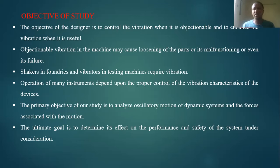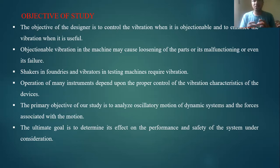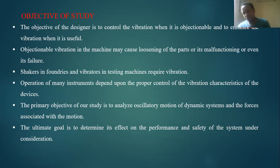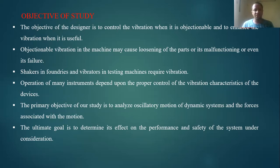Objectionable vibration in machines may cause loosening of parts — for example, nuts and bolts — and then finally cause failure of the system. Shakers and vibration in testing machines require vibration. Operations of many instruments depend upon proper control of vibration characteristics. The primary objective of our study is to analyze oscillation motion of dynamic systems and the forces associated with the system. The ultimate goal is to determine its effect on the performance and safety of the system.